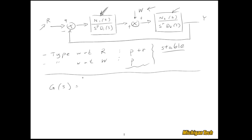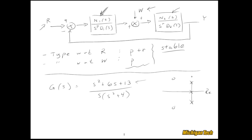Let's do an example. Our plant G(s) equals (s² + 6s + 13) / (s(s² + 4)). This plant has a pole at the origin, a pair of pure imaginary poles from s² + 4, and a pair of complex zeros from s² + 6s + 13.